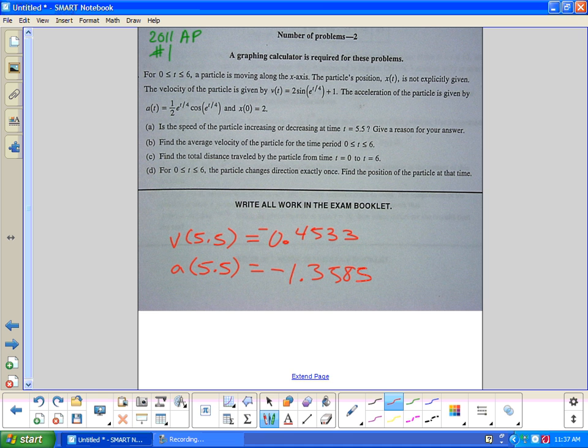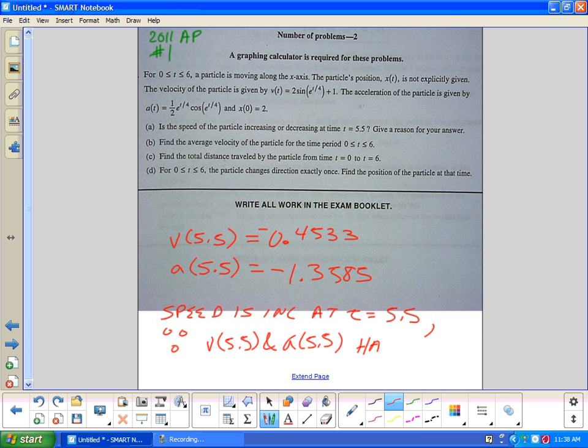There's no units on this. I was looking to put units, I see no units. So what's the answer? The answer is speed is increasing at time equals 5.5 because v(5.5) and a(5.5) have the same sign. Or you could say they're both negative. That would be a credit to you.